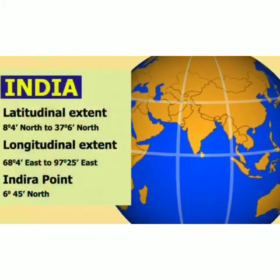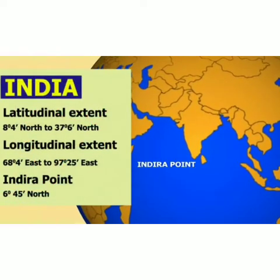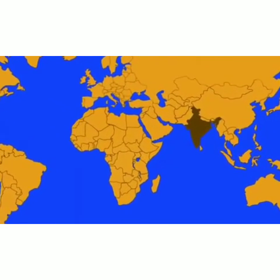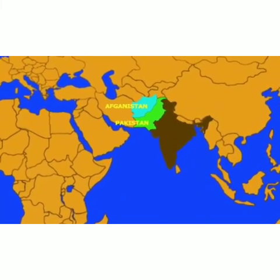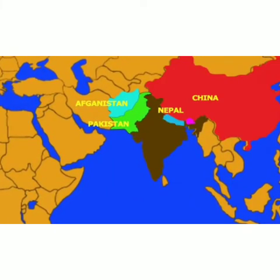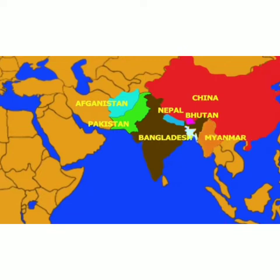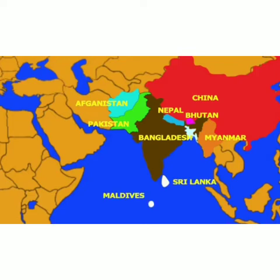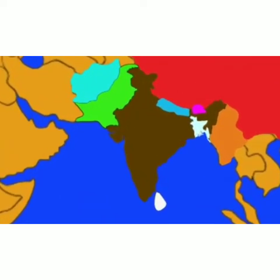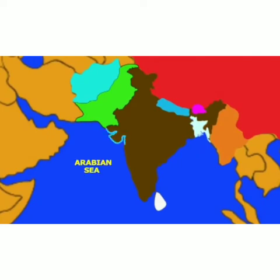Let's talk about the southernmost tip of India. Indira Point is the southernmost tip of India, located at 6 degrees 45 minutes north. India is surrounded by Pakistan and Afghanistan towards the northwest; China, Nepal and Bhutan towards the north; Bangladesh and Myanmar towards the east; Sri Lanka and Maldives towards the south. India has a coastline along the Arabian Sea towards the west and the Bay of Bengal towards the east.